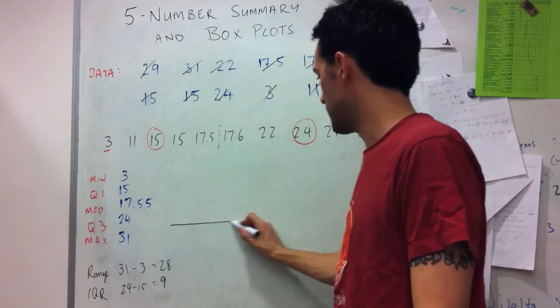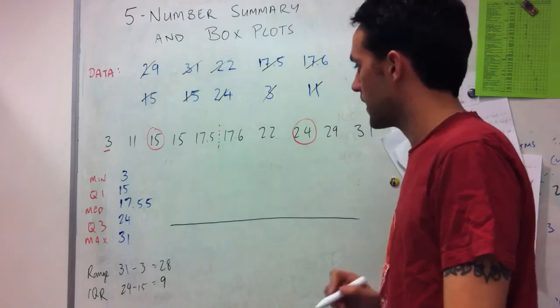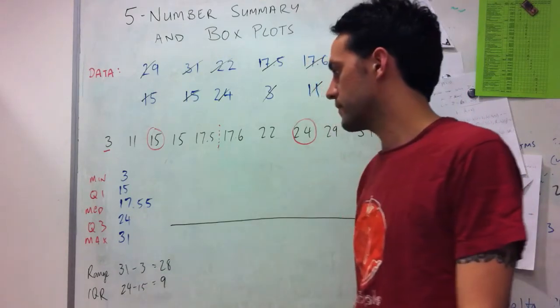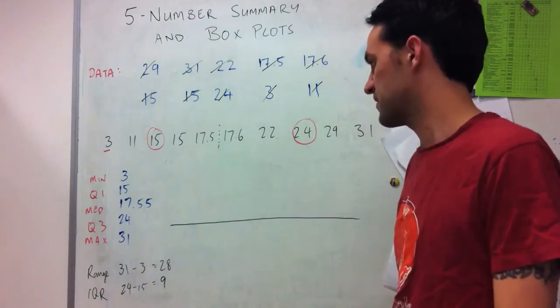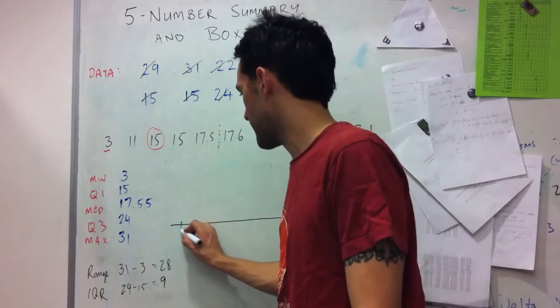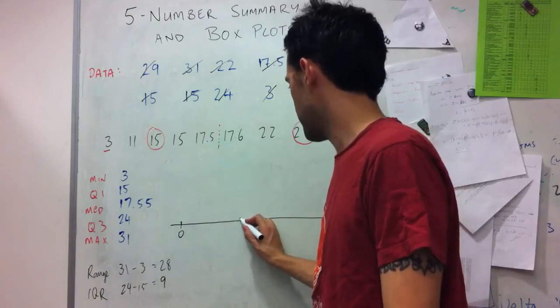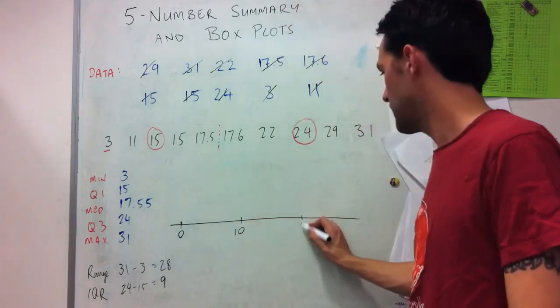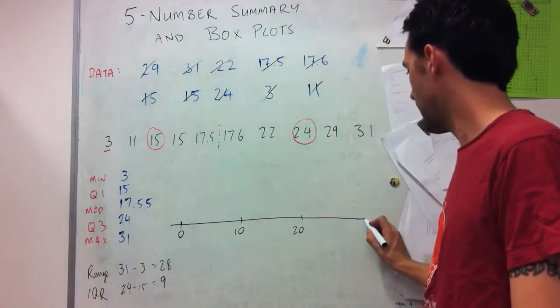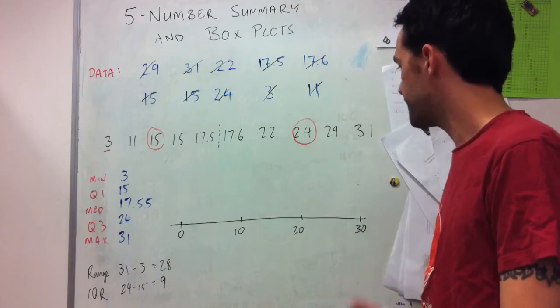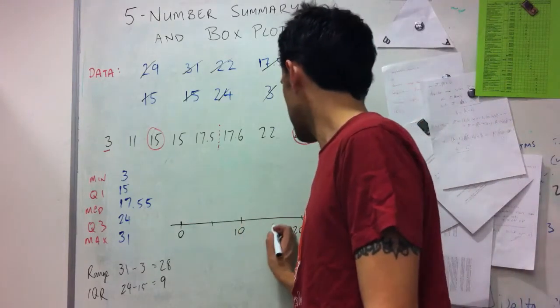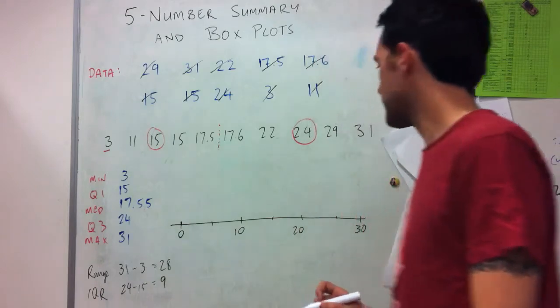So excuse the line. So I need to be able to go from pretty much from 0 up to 31 or whatnot. So I'm going to mark it 0. And then maybe I'll have 10 here, 20 here, 30 here. So I'll put in 5 tick marks as well.